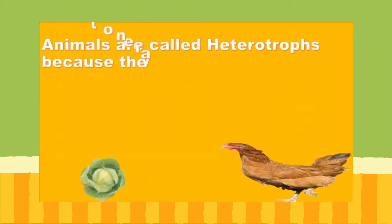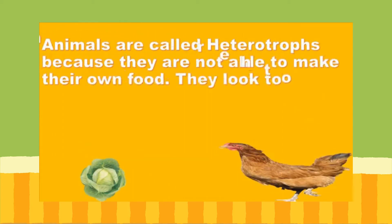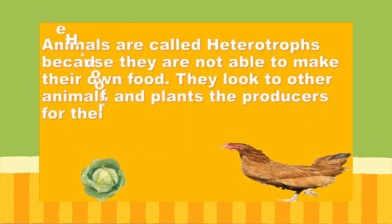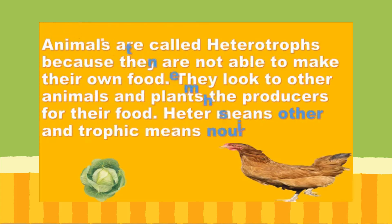While plants are able to make their own food because they are given that ability, animals are not able to make their own food. Therefore, they are called heterotrophs. They have to seek food from other animals and plants, who are the producers for their food. Hetero in the word heterotrophs means other, and trophic means nourishment.